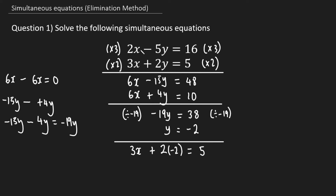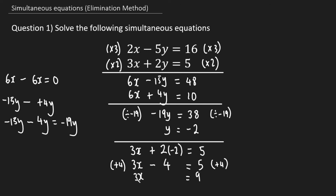I've chosen the second equation and replaced y with the value found in step three. Now I just solve for x. 2 times negative 2 is negative 4, so we have 3x minus 4 equals 5. I get rid of the minus 4 by adding 4 to both sides, giving us 3x equals 9. Then I divide both sides by 3, which gives us x equals 3.